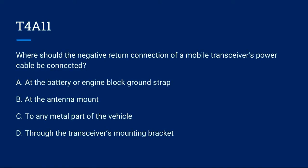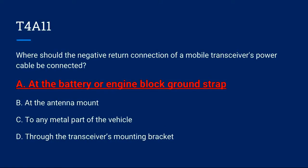T4A-11: Where should the negative return connection of a mobile transceiver's power cable be connected? A. At the battery or engine block ground strap. B. At the antenna mount. C. To any metal part of the vehicle. Or D. Through the transceiver's mounting bracket. The correct answer is A. At the battery or engine block ground strap.